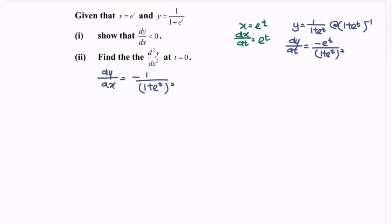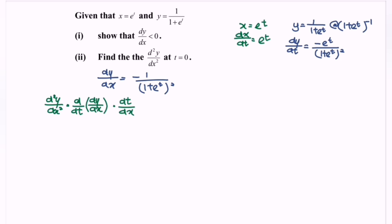So for the second part, find the second derivative at t equals 0. For parametric differentiation, we have the formula: second derivative equals differentiate dy/dx with respect to t, then multiply with dt/dx. So for this case, we have negative bracket 1 plus e to the power of t to the power of negative 2.